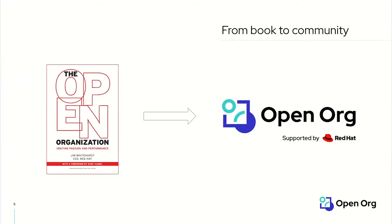Eventually that conversation outgrew a single book about a single company — one book about Red Hat — and participation in the community kept increasing. We began creating content in the form of books, articles, definitions, and all different kinds of things, all designed to continue the conversation that the open organization started. An upstream community formed around the ideas in this book — an open source project really focused on exploring open principles at work in organizations all over the world.